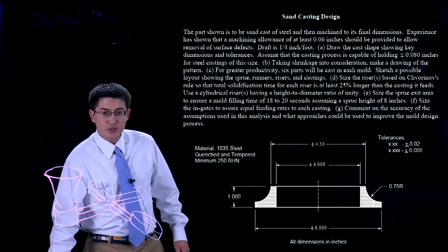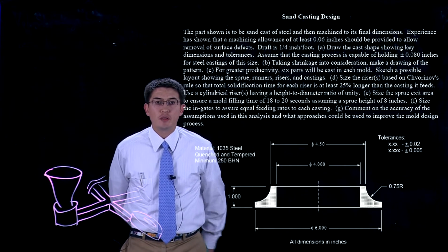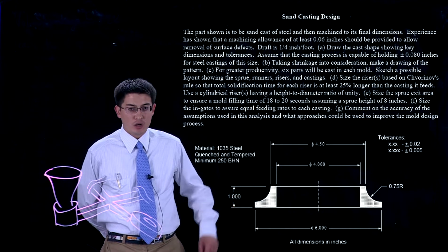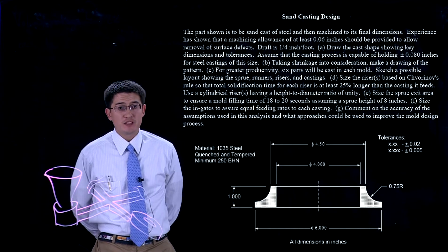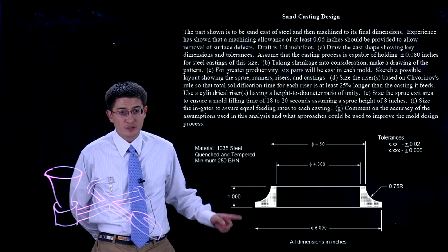This is video two in this series going over the casting example of this small ring object. This is the problem statement if you need to review, along with the final dimensions.